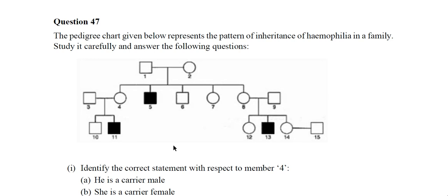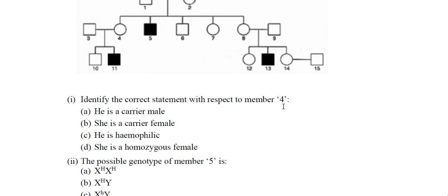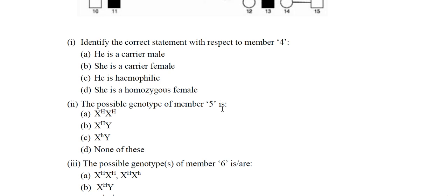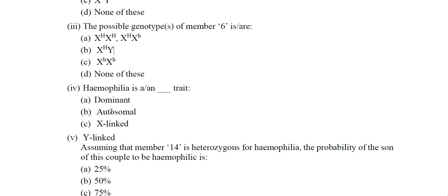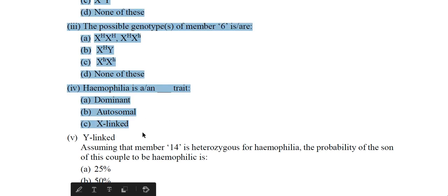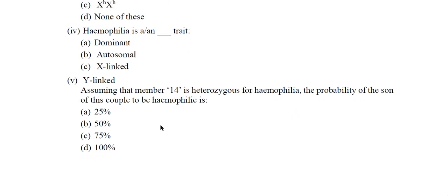Question 47: A pedigree chart representing the pattern of inheritance of haemophilia in a family. Member 4 is a carrier female, option B. The possible genotype of member 5 is X(h)Y. The possible genotype of member 6 is X(H)Y. Haemophilia is X-linked. Assuming member 14 is heterozygous for haemophilia, the probability of a son of this couple being haemophilic is 25%, option A.